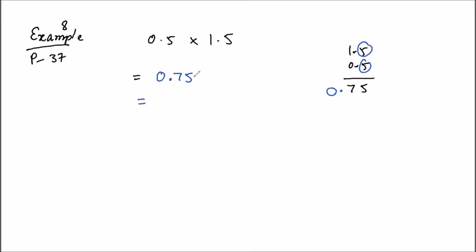Now we will convert into fraction form. For this decimal point we have one, there are two digits, so we have written two zeros in the denominator. Now simplify, you will do cutting.